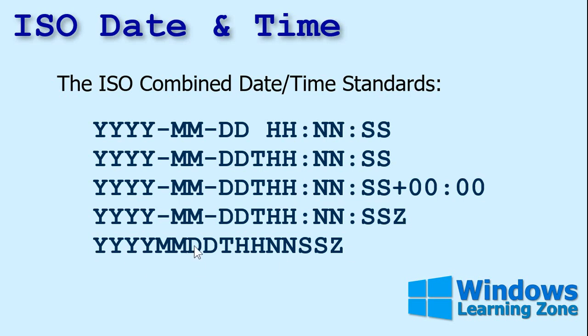This one indicates it's UTC. And here you might see it without any punctuation marks — this is perfectly valid. You can do year, month, day — notice they're all two digits — then a T, then hours, minutes, seconds, universal.